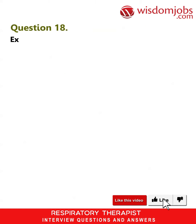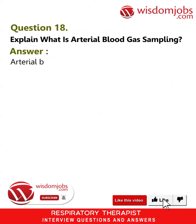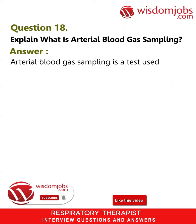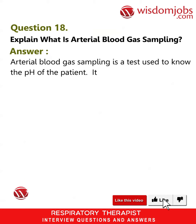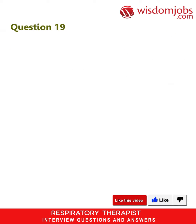Question 18: Explain what is arterial blood gas sampling. Answer: Arterial blood gas sampling is a test used to know the pH of the patient. It is very helpful in diagnosing any chronic or acute respiratory failure.